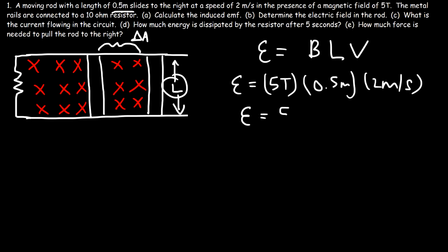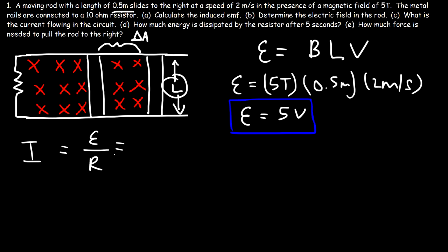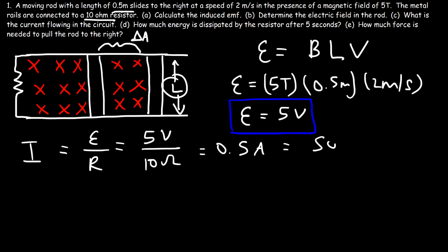So the induced EMF in this example is going to be 5 volts. Now we can calculate the current flowing in the circuit, which is the induced EMF divided by the resistance. The induced EMF is 5 volts and the resistance is 10 ohms, so 5 divided by 10 is 0.5 amps, which is 500 milliamps. That's the current flowing in the circuit.